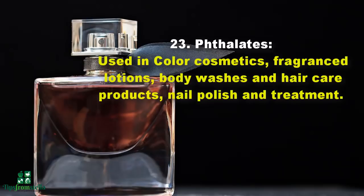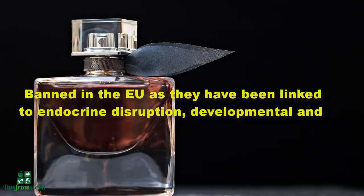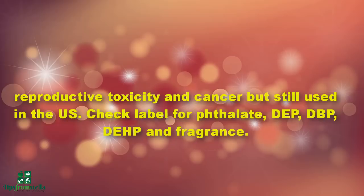Number twenty-three: phthalates. Used in color cosmetics, fragrance, lotions, body washes, hair care products, nail polish, and treatments. Banned in the EU as they have been linked to endocrine disruption, developmental and reproductive toxicity, and cancer — but still used in the US. Check label for phthalates, DEP, DPB, DEHP, and fragrance.